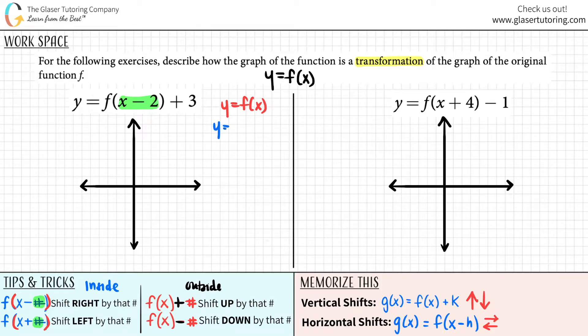So y equals f of x minus 2. This minus 2 changed the actual function. And if we can just memorize the difference between all four of these, you would know that a negative inside the parentheses is a right shift. You shifted to the right. So in this case, the first thing that we have to address is we shifted to the right two units. So that's one shift.